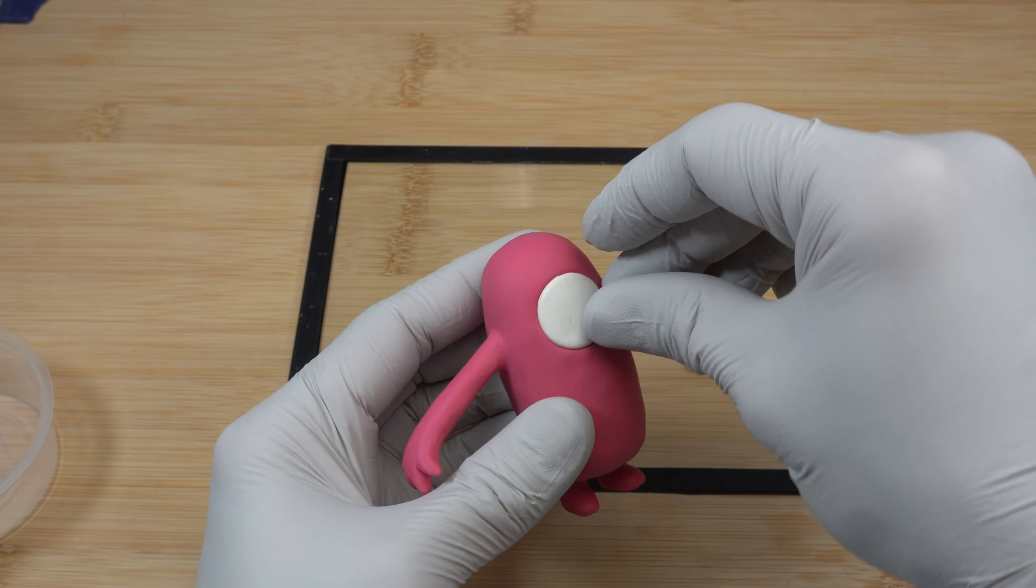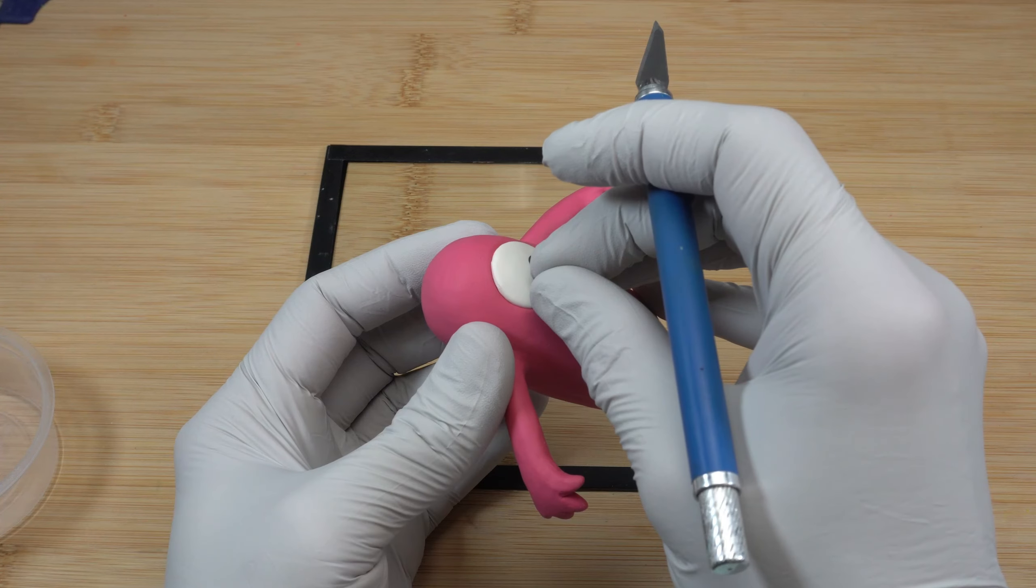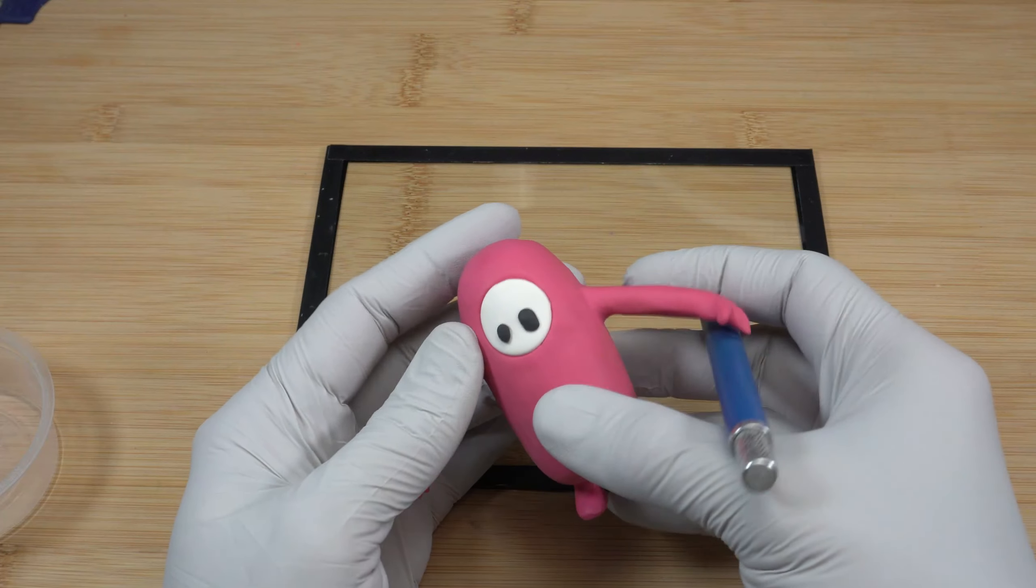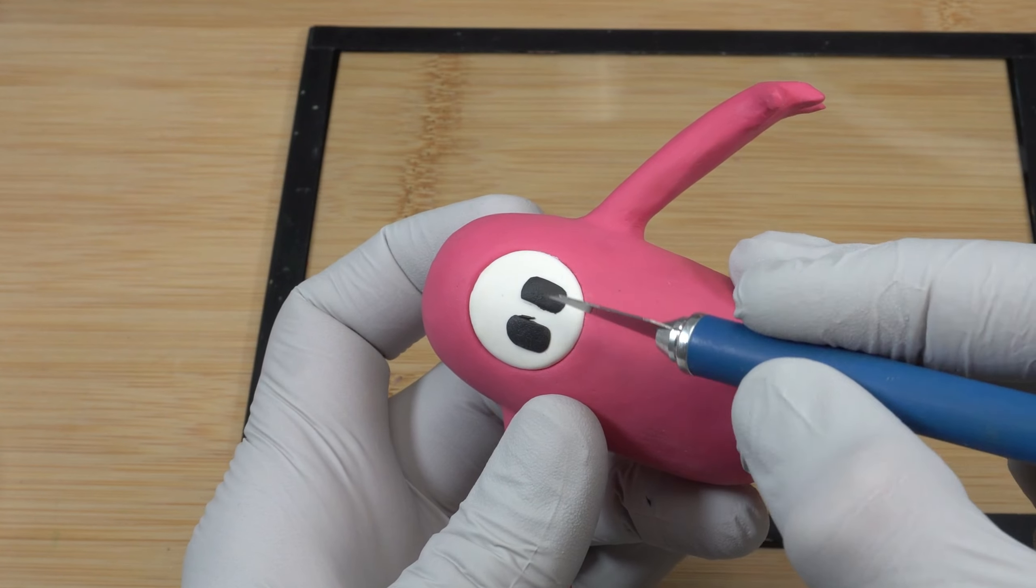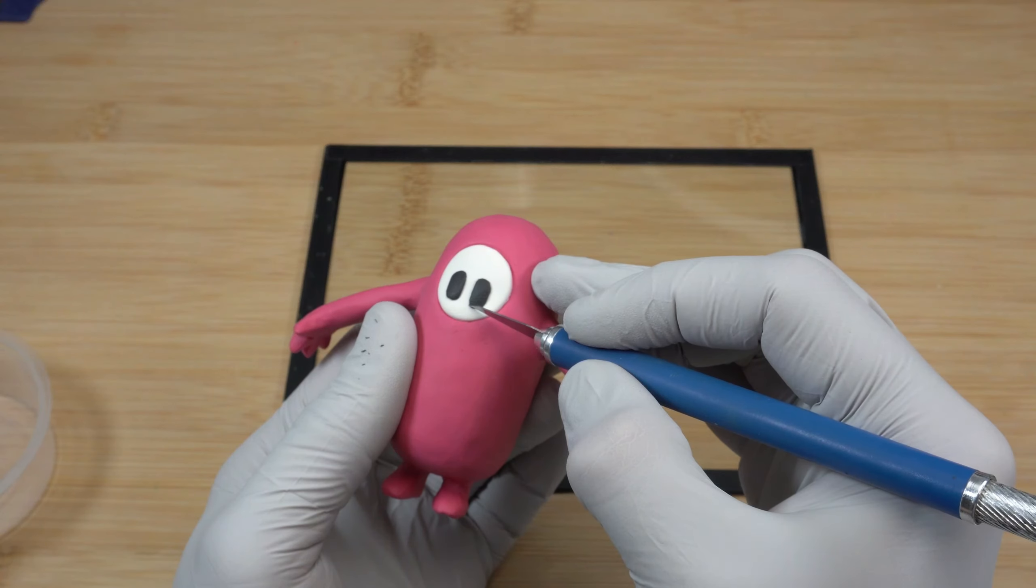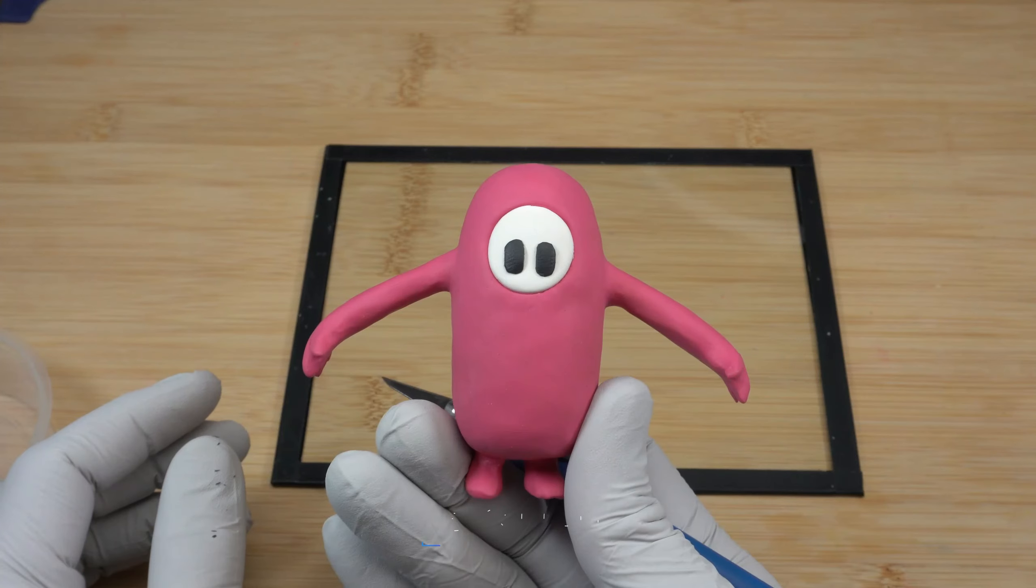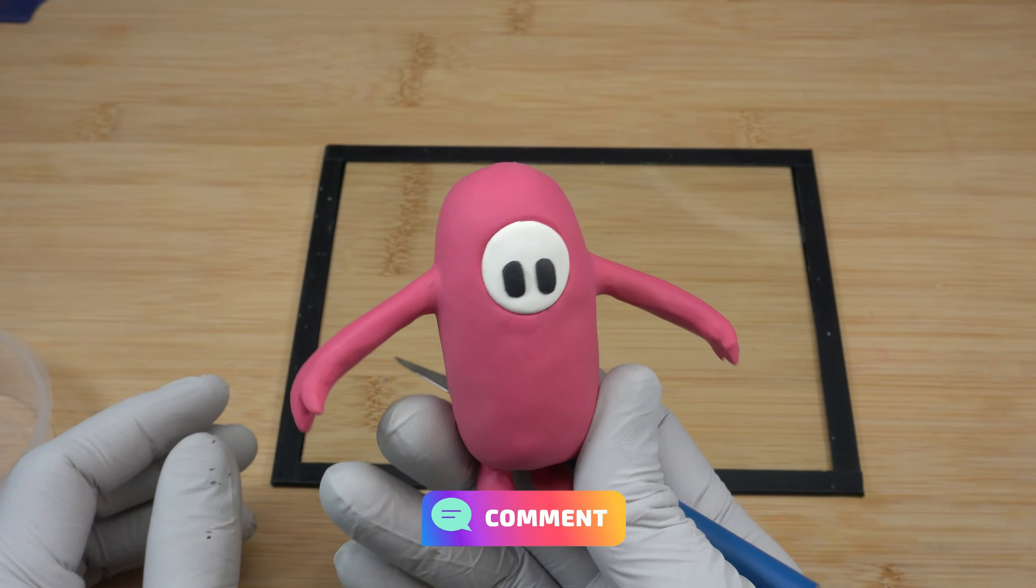Now I'm creating the eyes again. I'm using two balls of black clay and cutting the excess clay using the exacto knife. This time I'm leaving the eyes a little bit bigger. Let me know in the comments what you think of the figure.